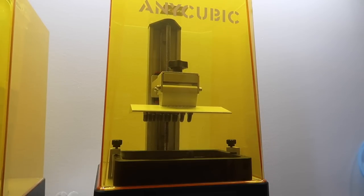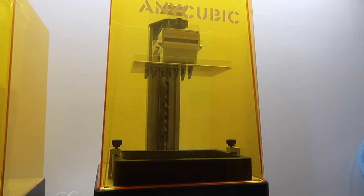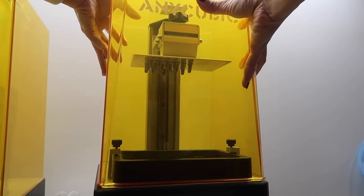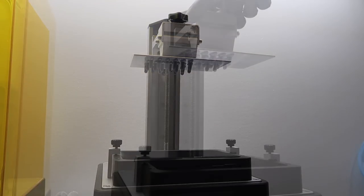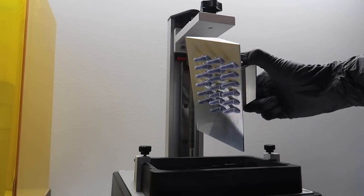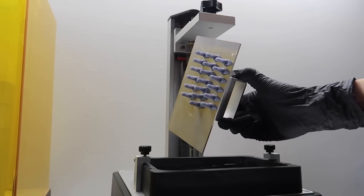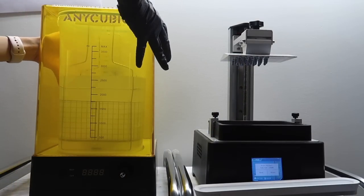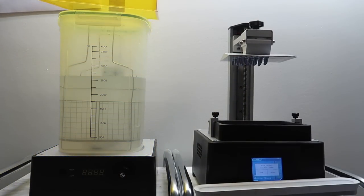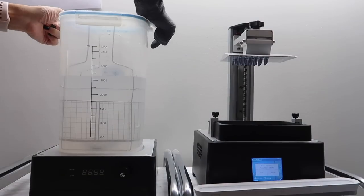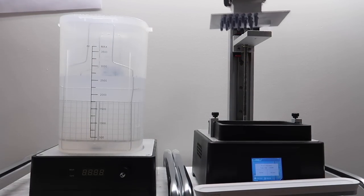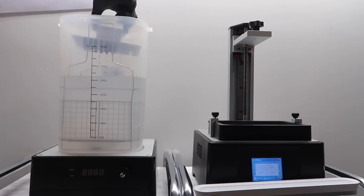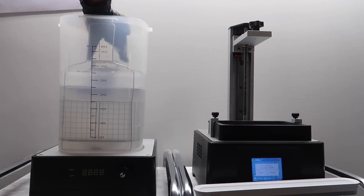In just a matter of minutes, I have more than a dozen shoes. I wash all the excess resin off with 90% isopropyl alcohol and then cure it in my light machine. This wash and cure machine is honestly a lifesaver because resin printing can be so messy and time consuming.